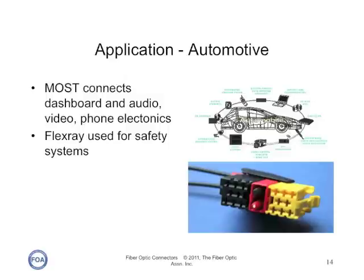Plastic fiber is used in lots of automobiles too. There are two typical systems: most connects the dashboard and the audio, video, and phone electronics in the car, creating a ring-type network using a connector that combines optical and electrical contacts. FlexRay is used for safety systems, like airbags.